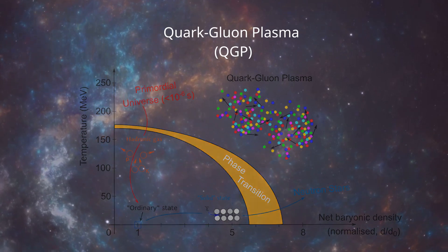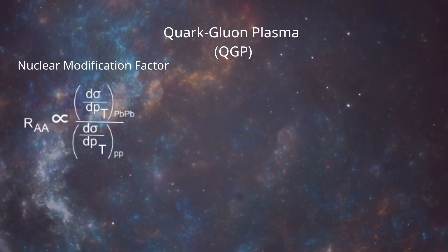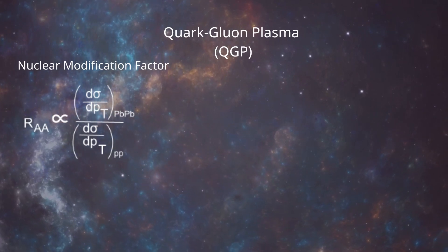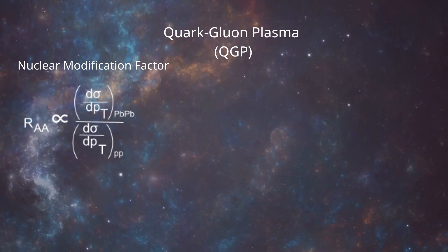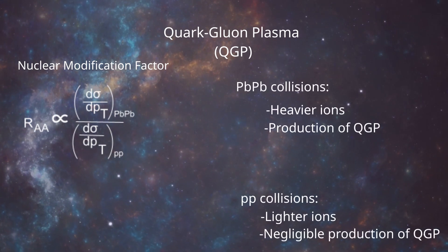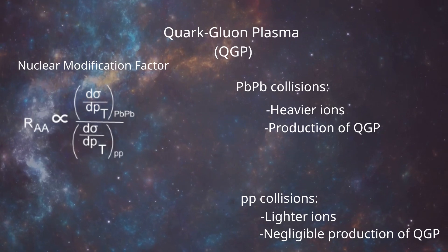To study this plasma, we will need to calculate something called the nuclear modification factor. We observe this factor by comparing the cross-sections between proton-proton collisions and lead-lead collisions, being the main difference between these that lead-lead collisions allow production of QGP, whilst proton-proton do not.